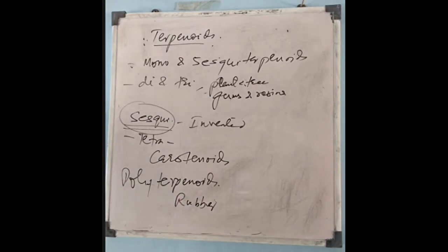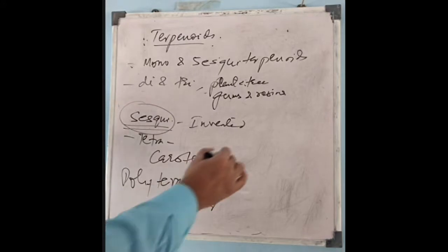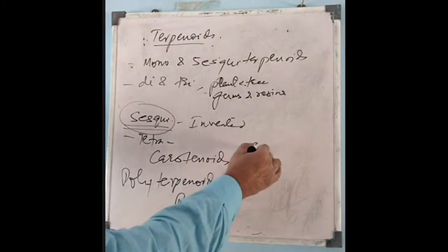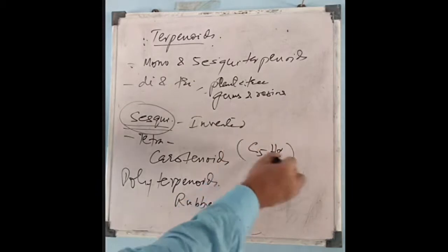The main types summarized: mono and sesquiterpinoids, then diterpinoids, then sesquiterpinoids, then tetraterpinoids, and finally polyterpinoids. Most natural terpenoid hydrocarbons have the general formula C5H8 whole n.